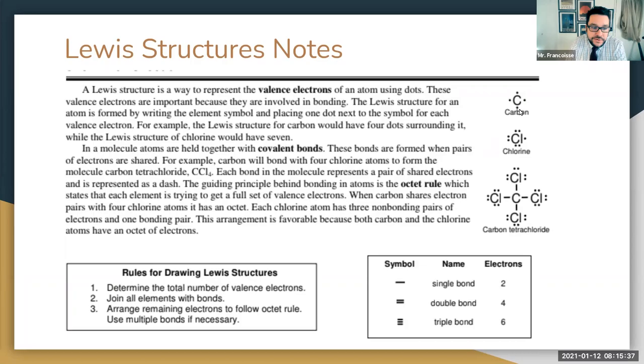These bonds are formed when pairs of electrons are shared. For example, each carbon will bond with four chlorines to form carbon tetrachloride — this is what we saw yesterday with the naming. Each bond in the molecule represents a pair of shared electrons represented by a dash. This line represents two electrons.